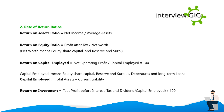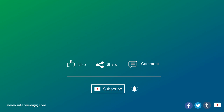Return on Capital Employed = Net Operating Profit ÷ Capital Employed × 100; Capital Employed = Equity Share Capital + Reserve and Surplus + Debentures + Long-Term Loans, or alternatively Total Assets − Current Liabilities. Return on Investment = Net Profit Before Interest, Tax and Dividend ÷ Capital Employed × 100.